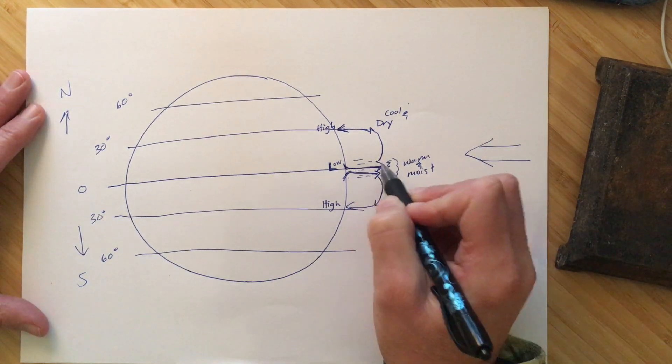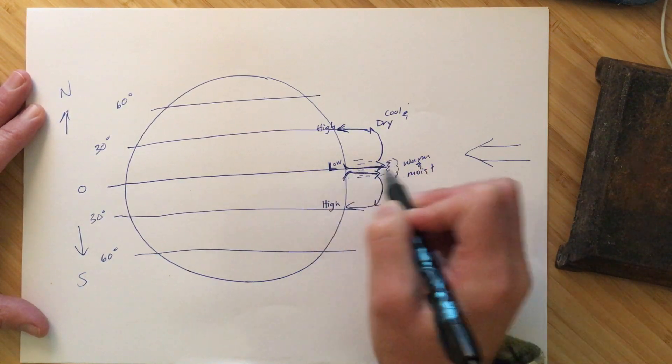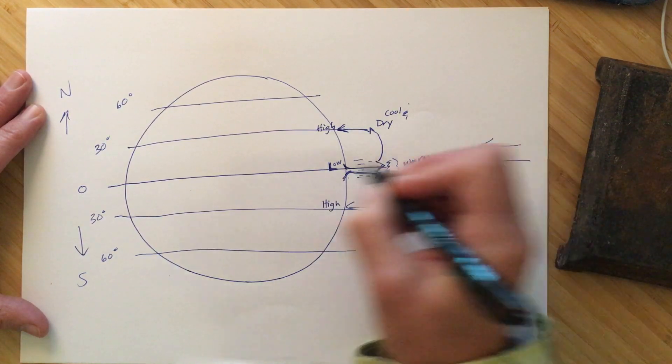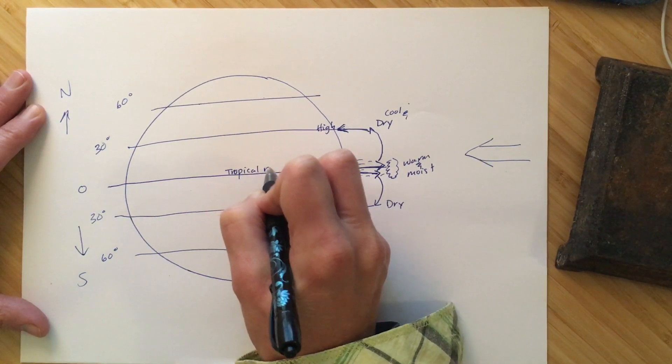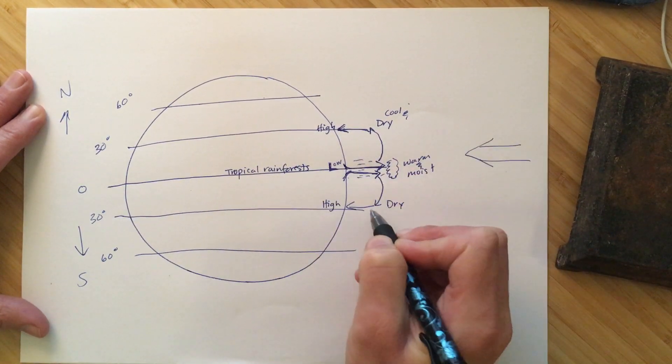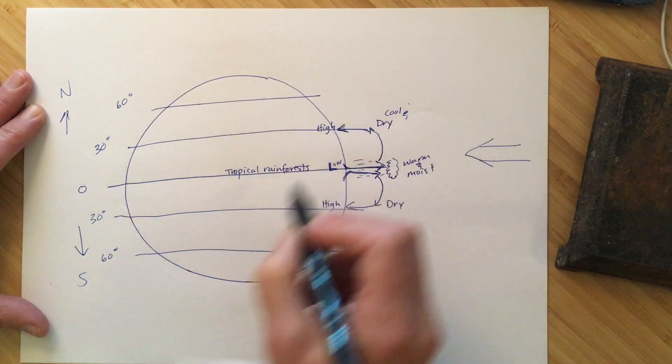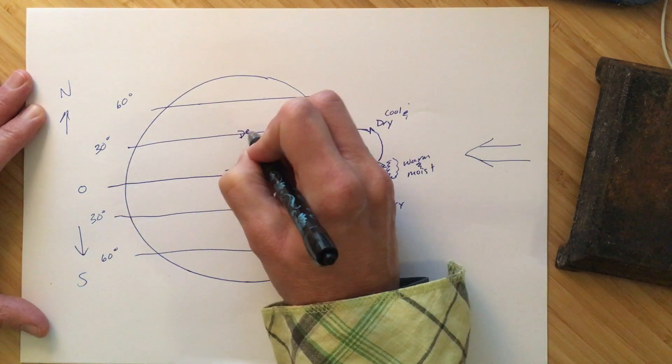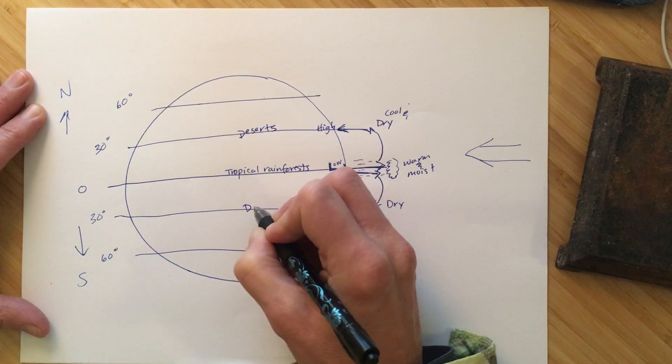So where we had all of this low pressure system and, you know, cloudy and the rain, you know, lots of rain happening, this is where we see most of the tropical rainforests. But where the cool dry air is descending, all of this dry air, this is where we see the band of deserts. So we see deserts generally north and south around 30 degrees.